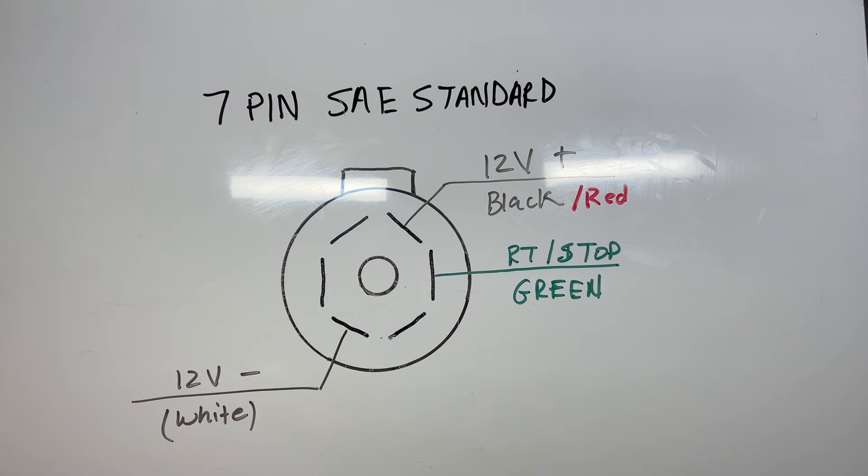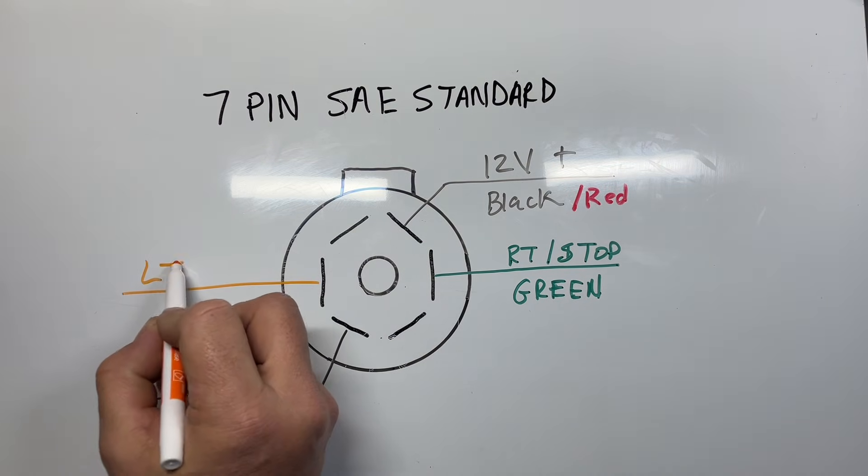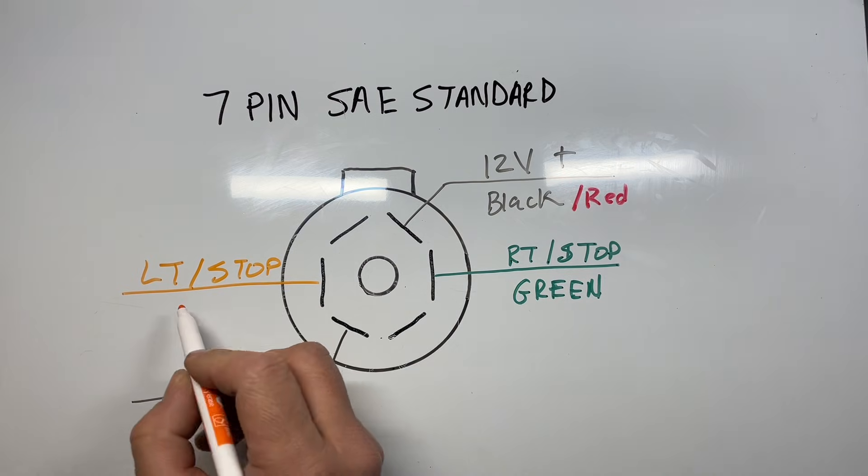Now directly opposite of that, which I also don't have a yellow marker, we're going to use orange in its place. This is going to be your left turn and stoplight for your left side, and this is going to be in yellow.